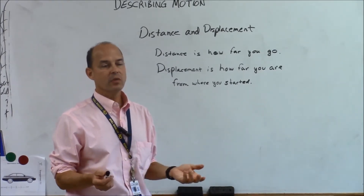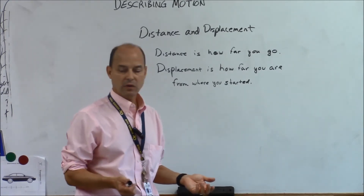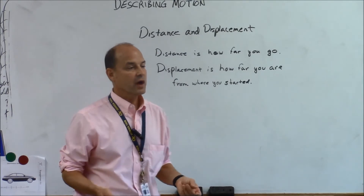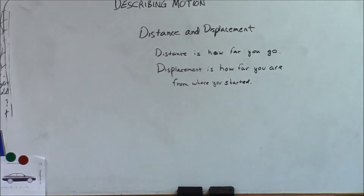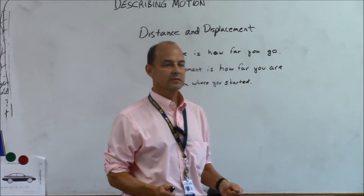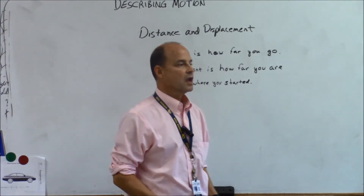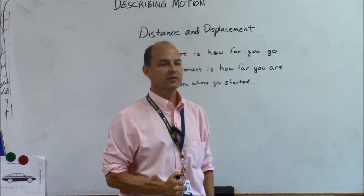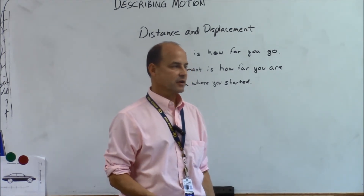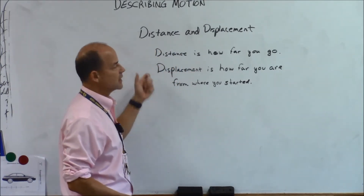I like to do the example where I walk around the classroom. I'm going to go 1, 2, 3, 4, 5, 6, 7, 8, 9, 10, 11. I've gone a distance of 11. What's my displacement? Zero — because I'm right back where I started. So my displacement is zero. That's the difference between distance and displacement.